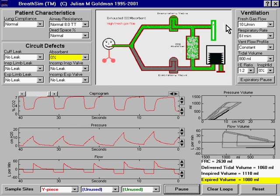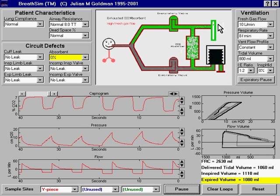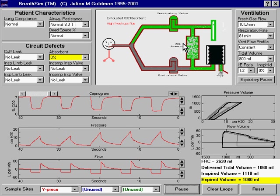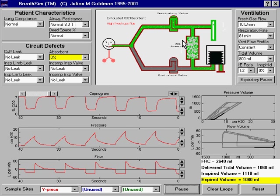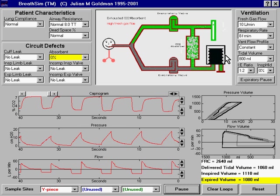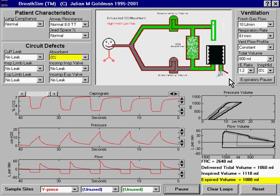now, during expiration, we can see that the fresh gas flow that's being added to the breathing system at 10 liters per minute is moving backward through the CO2 absorber and washing the CO2 out of the CO2 absorber and towards the ventilator bellows and out of the ventilator low-pressure pop-off valve. Therefore,